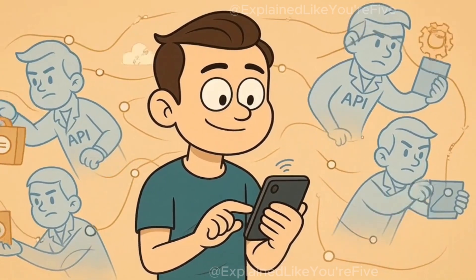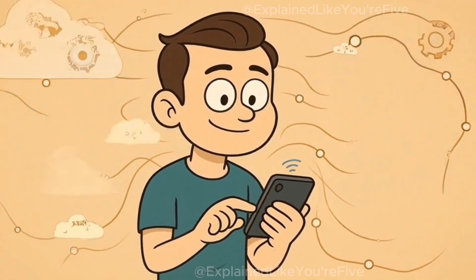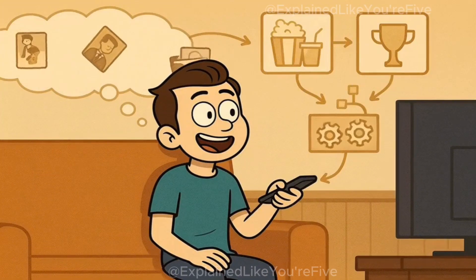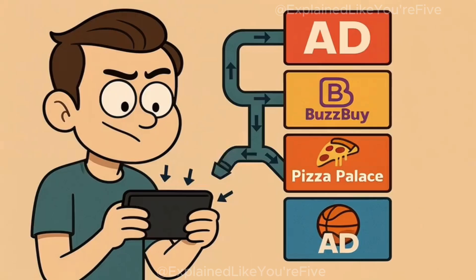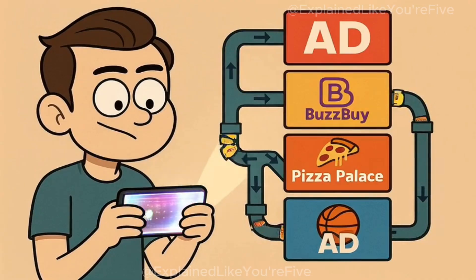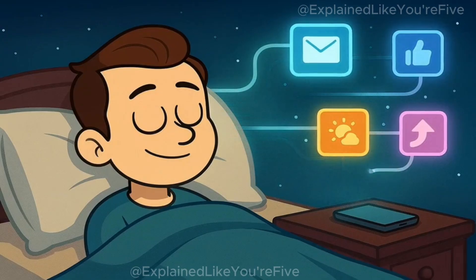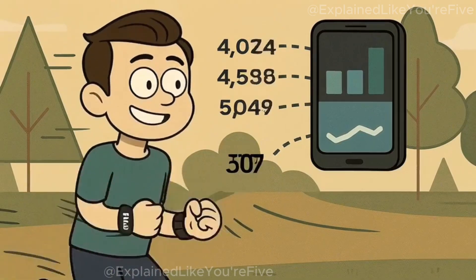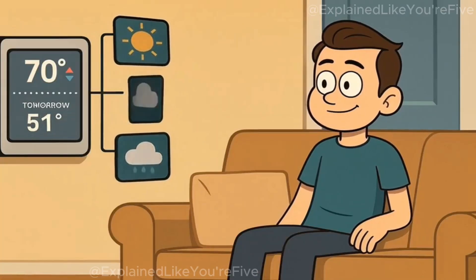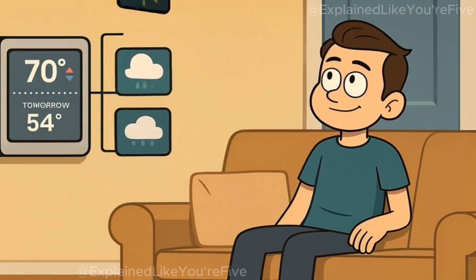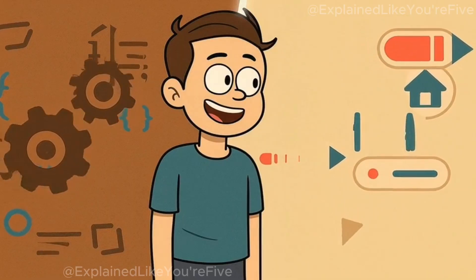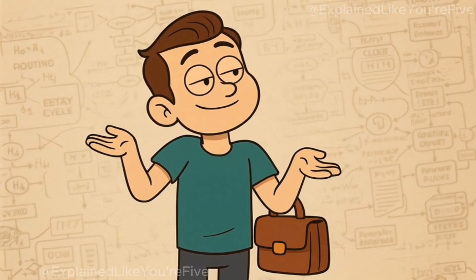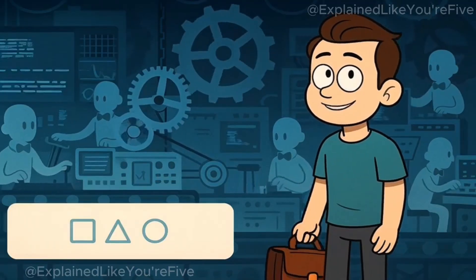The really cool thing about APIs is that they are everywhere, doing invisible work to make your digital life smooth and seamless. When you ask Siri a question, Siri uses APIs to search the internet, check your calendar, or control your smart home devices. When you watch Netflix, Netflix uses APIs to figure out what shows to recommend to you based on what you've watched before. When you play a mobile game that shows ads, the game uses APIs to fetch those ads from advertising companies. Even when you're not actively using your phone, APIs are at work. Your phone might use location APIs to figure out where you are so it can remind you to buy milk when you're near a grocery store. Your fitness tracker uses APIs to sync your step count with your phone's health app. Your smart thermostat uses APIs to check the weather forecast so it knows whether to heat or cool your house tomorrow. The beautiful thing about APIs is that they make complex things simple — you don't need to understand how Netflix's recommendation algorithm works, or how Google Maps calculates the fastest route, or how your bank processes payments. You just need to know how to tap buttons on your screen. The APIs handle all the complicated stuff behind the scenes.